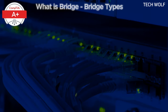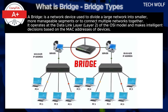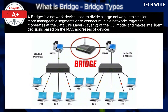A bridge is a network device used to divide a large network into smaller, more manageable segments, or to connect multiple networks together. It operates at the data link layer 2 of the OSI model and makes intelligent decisions based on the MAC addresses of devices. By analyzing and forwarding traffic only to the intended segment or device, a bridge helps reduce congestion, improve performance, and manage traffic more efficiently.